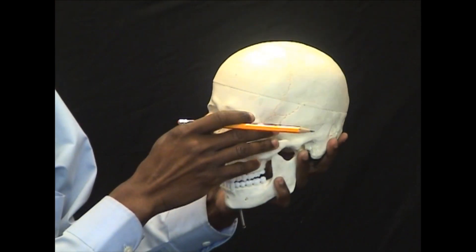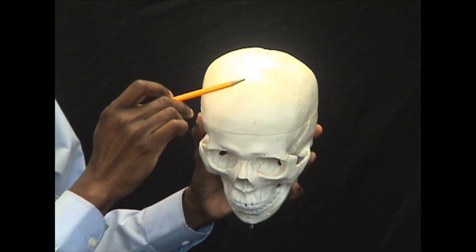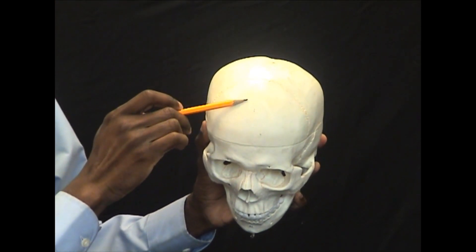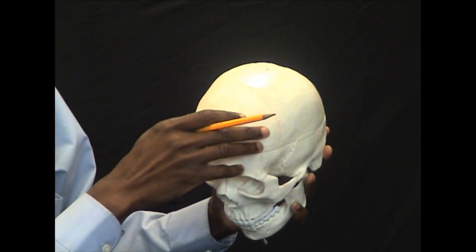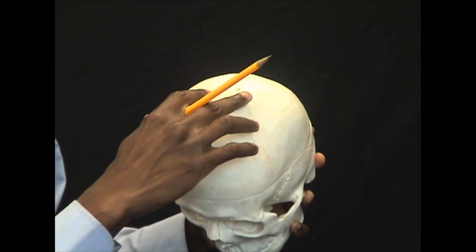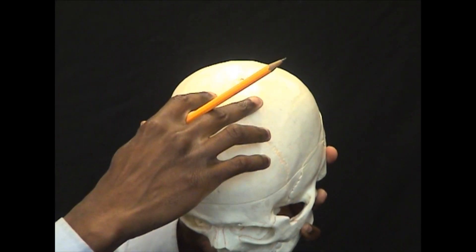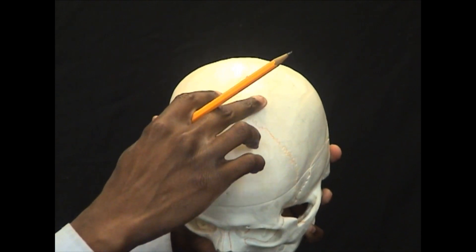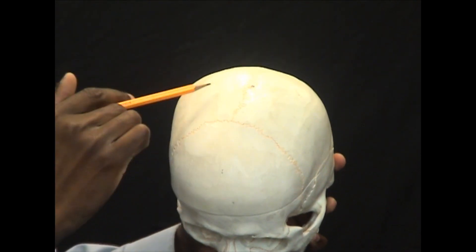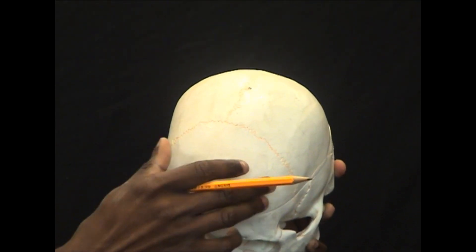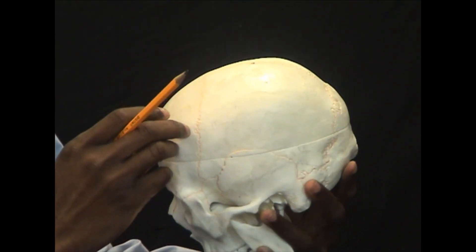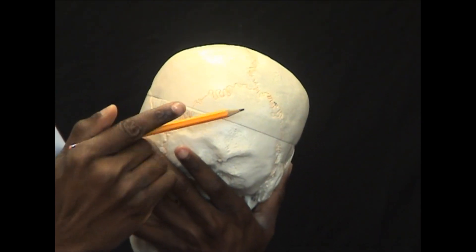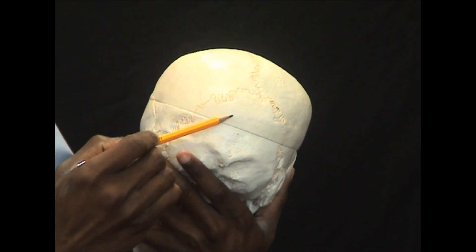The first bone is the frontal bone, the forehead. Posterior to the frontal bone are two parietal bones, right here. These two bones are the parietal bones, and posterior to those is the occipital bone.